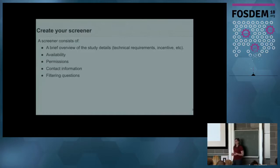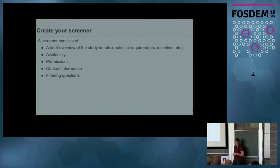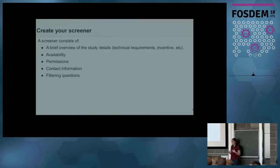In order to find the right users to speak to, you need to create a screener — essentially a short questionnaire that tests users' eligibility to take part in your study. Your study overview should contain details about when it's taking place, how long it's likely to take, and any technical requirements. Ideally you need to offer users an incentive. All the tools I'm going to mention today are completely free, but this is the one part where I insist you spend a tiny bit of money. I typically use Amazon gift cards, but even a token gesture like a sticker can encourage more people to take part.